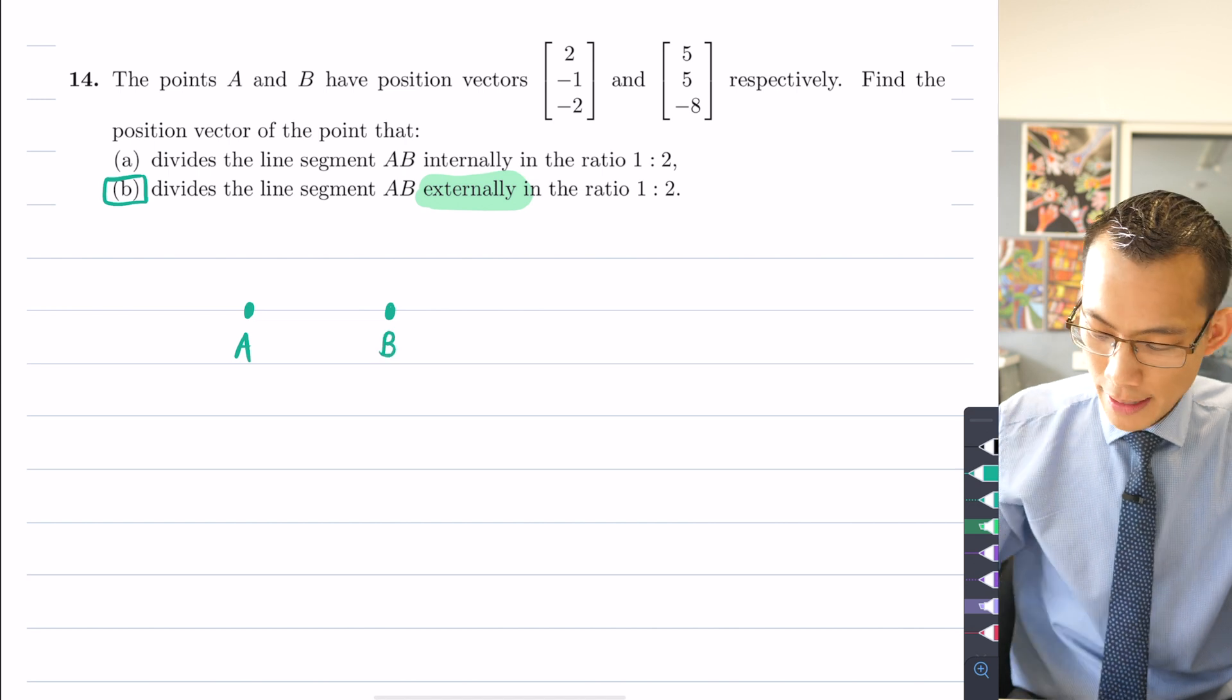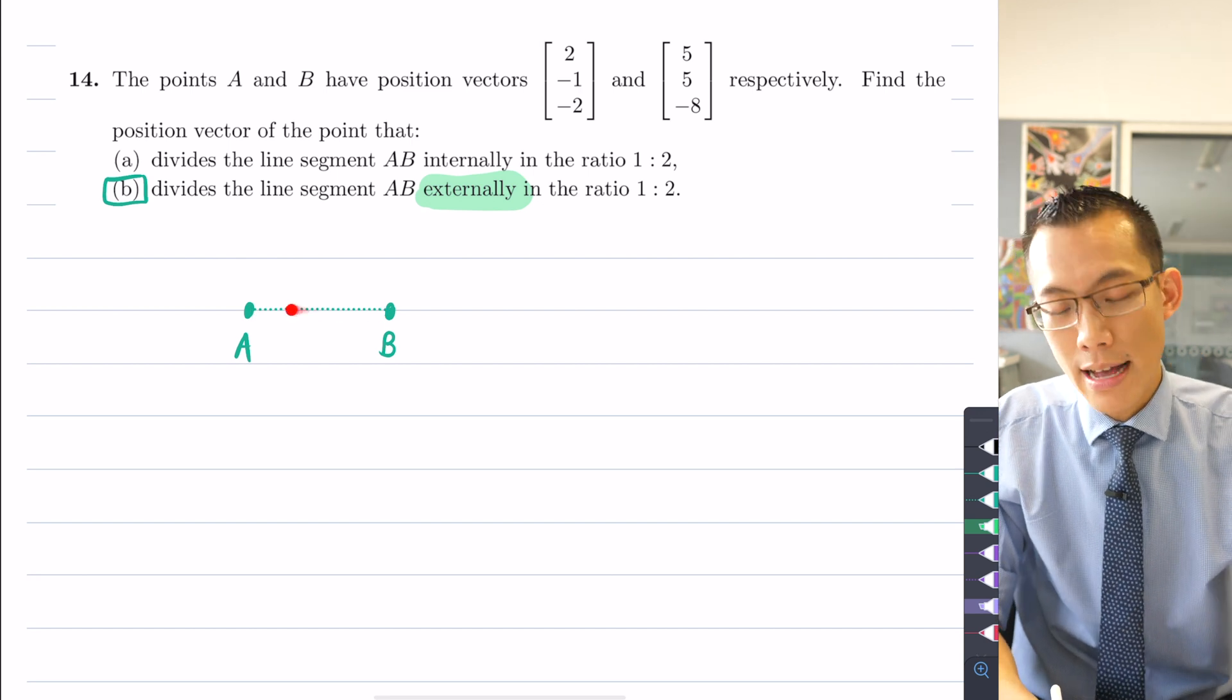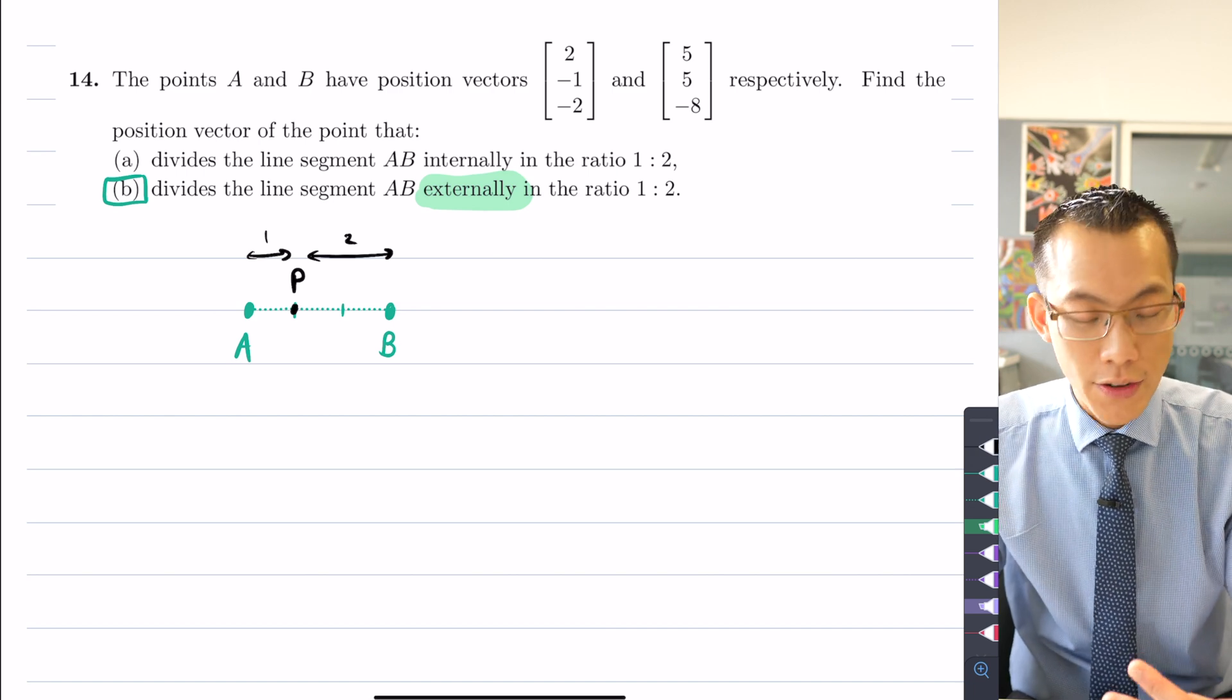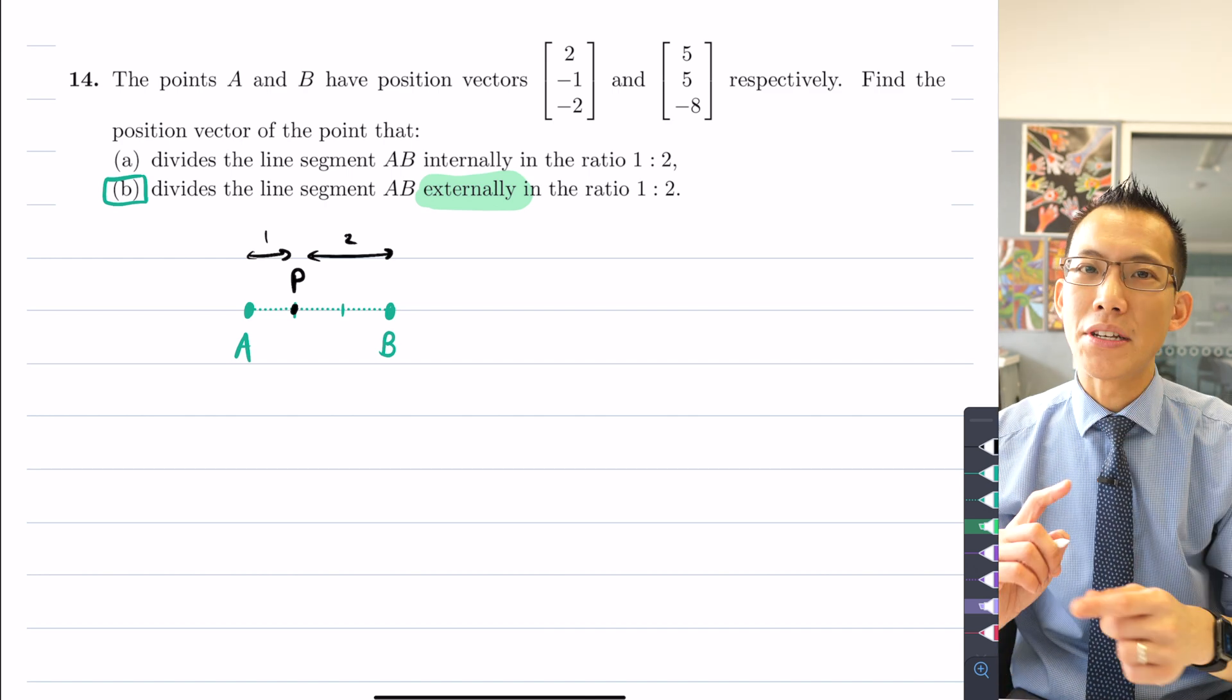Before we get to the particular position vectors, let's think about what it could mean to divide a line segment externally. If I provide some point A and some point B, then to divide that line segment internally, some point P is going to be internal to this particular interval, this line segment. If we were dividing in the ratio of one to two, I would divide this into three equal segments and then P would be here to give me this ratio of one to two. So that's what internal ratio division looks like. P will be between A and B, on the inside of A and B, and that's where the internally word comes from.